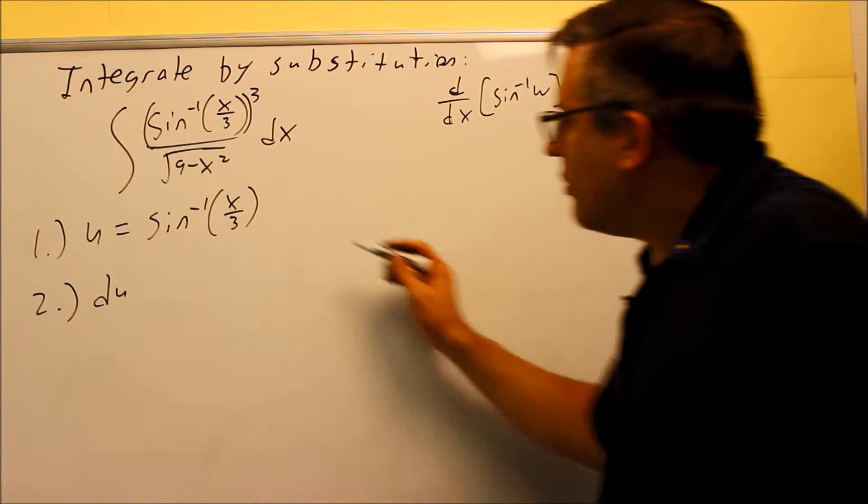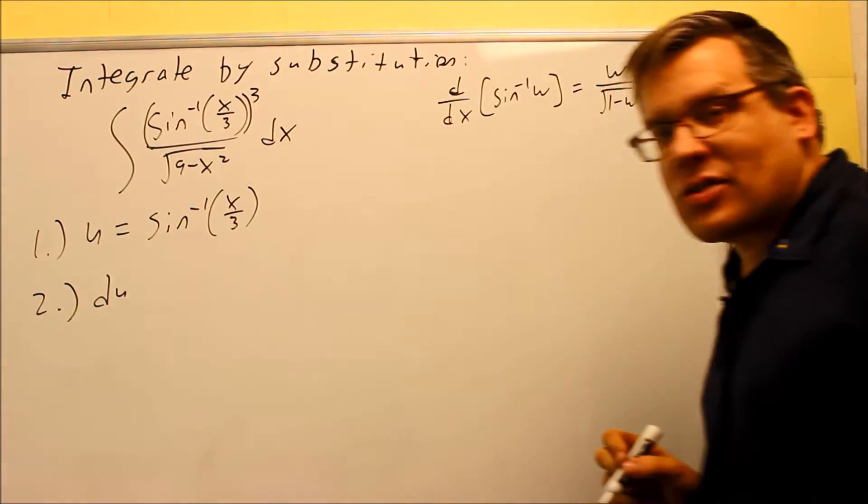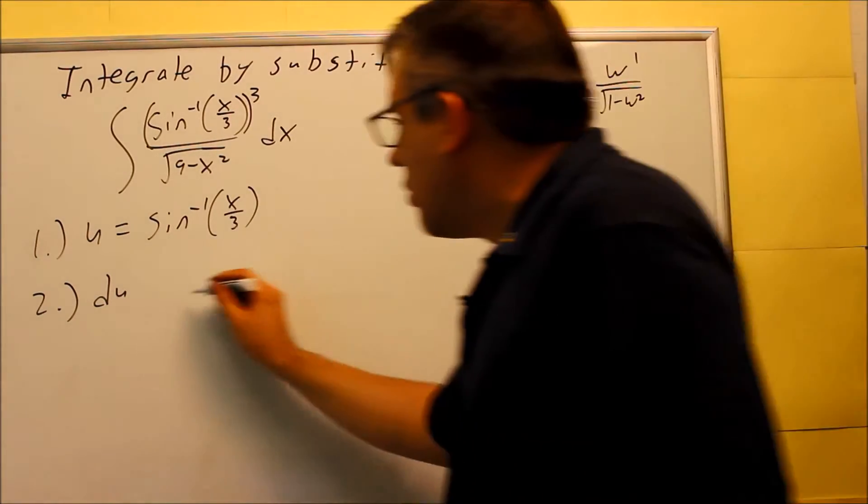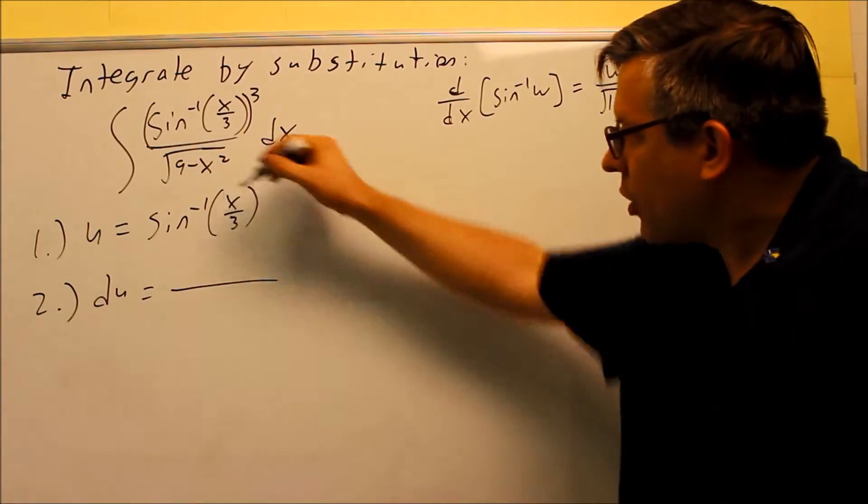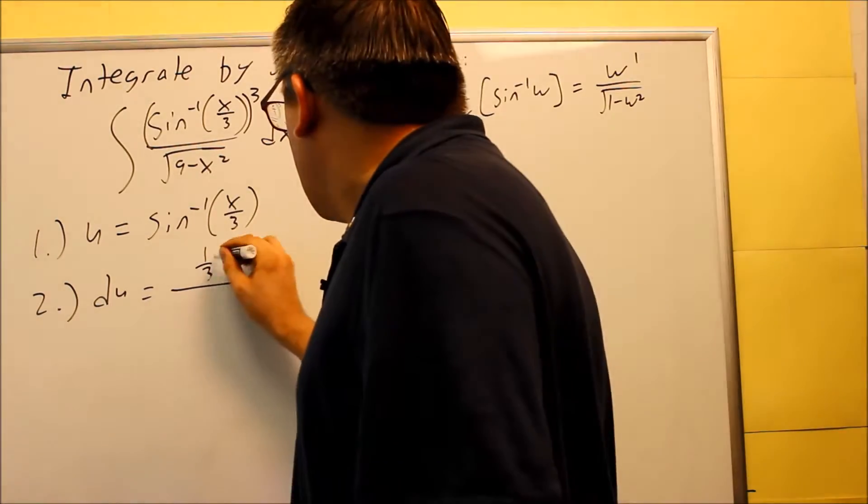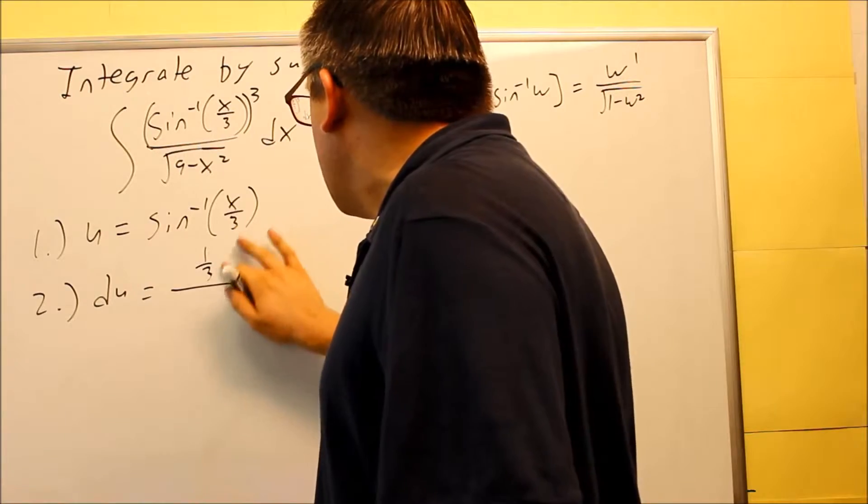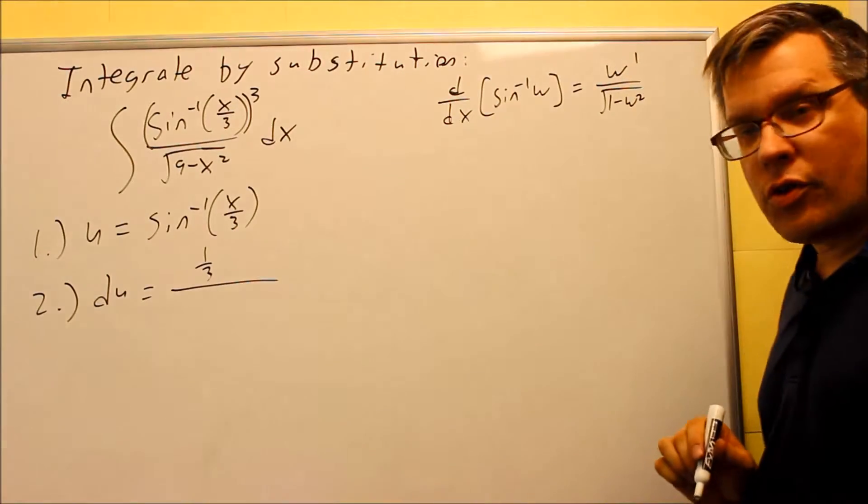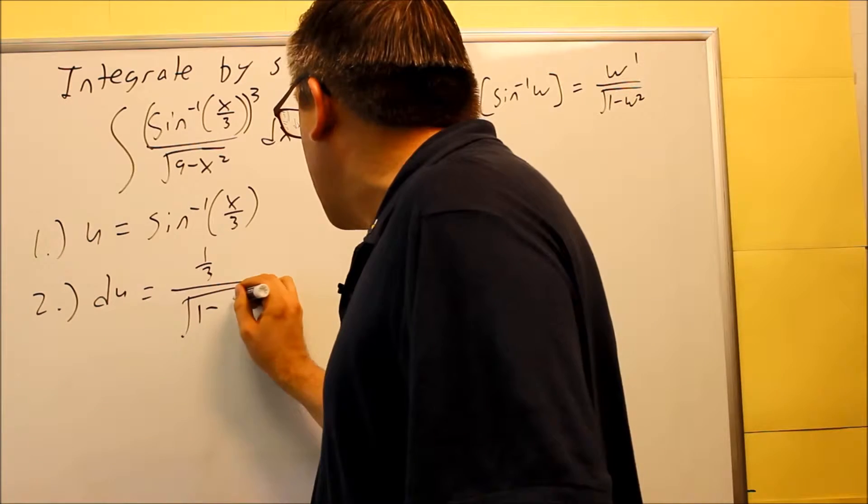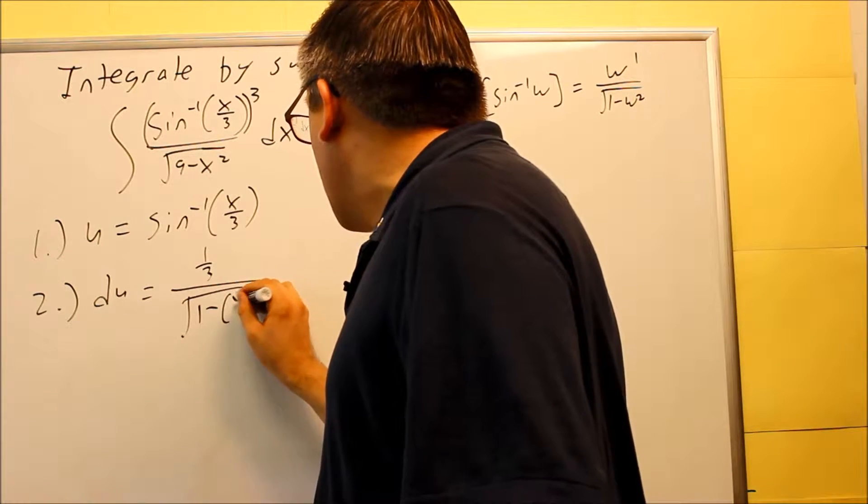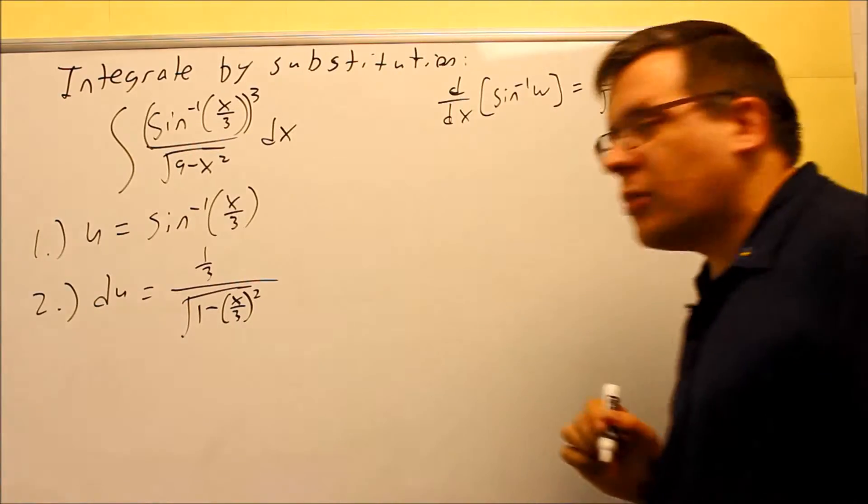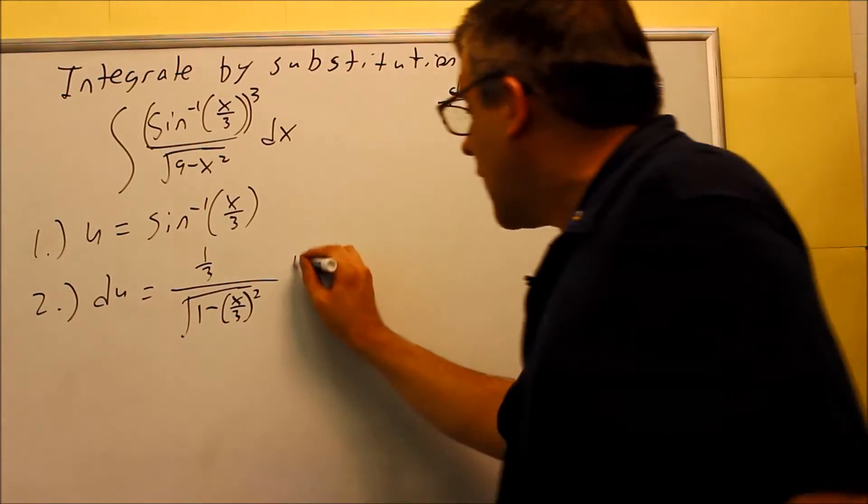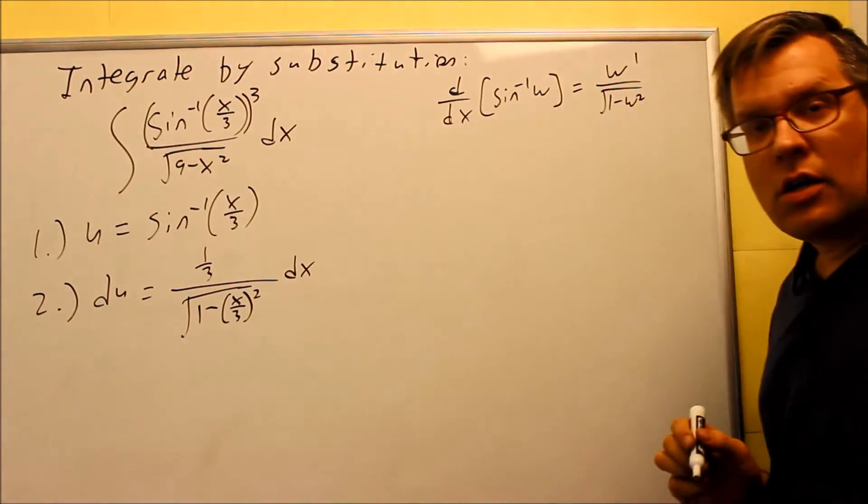In this case, we have a one-third x on the inside. So when I follow that formula and I do w prime, the derivative of the part on the inside there is just a one-third only, one-third x, the derivative of it is one-third. On the bottom, I have the square root of 1 minus x over 3 squared. x over 3 was my original w, and then I have all that multiplied by dx.